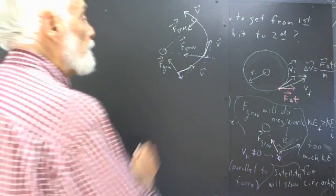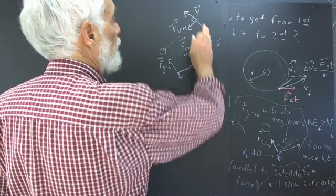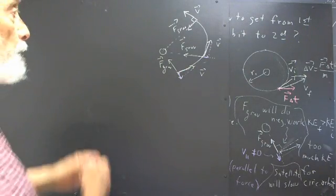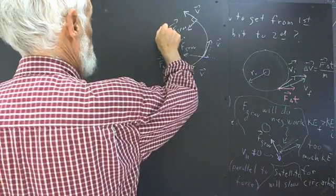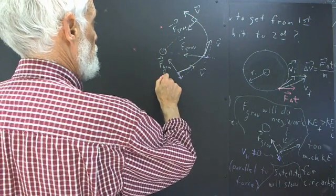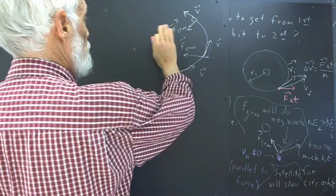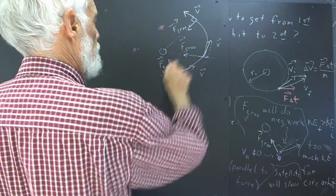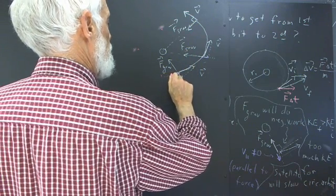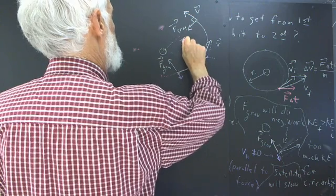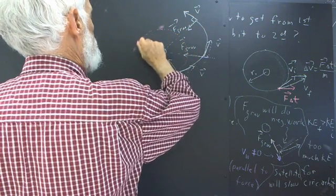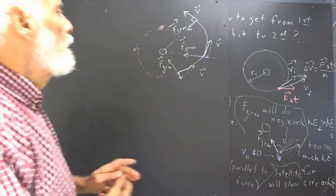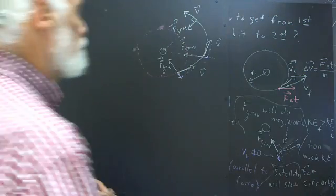Now, all this time, the satellite has been moving away from the circular orbit. Let's see if I can draw a circular orbit here. So let's say that here's our original circular orbit. We've moved out away from that circular orbit. But what's going to happen now?